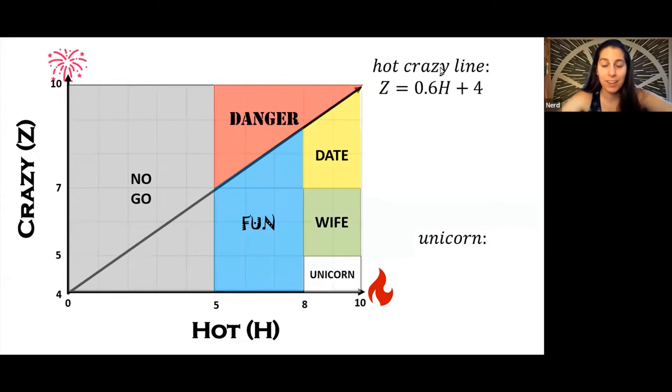Finally, there's the miraculous unicorn zone. Although McLennan claims such ladies don't exist, I've actually discovered a few of them in engineering. They don't get out much though, so you really have to look for them. These girls are above an 8 hot and below a 5 crazy, and if you find one, you really hit the jackpot.